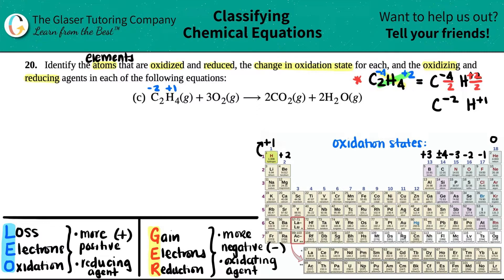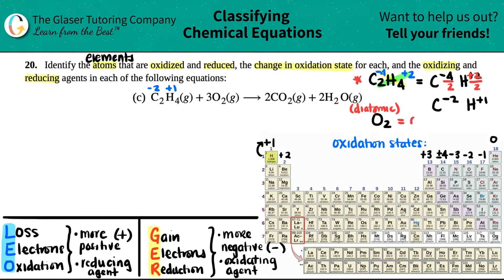The next atom we have is oxygen — it's just O₂. This is a diatomic, and diatomics are always neutral; they have a zero charge. So oxygen in O₂ has a charge of zero.